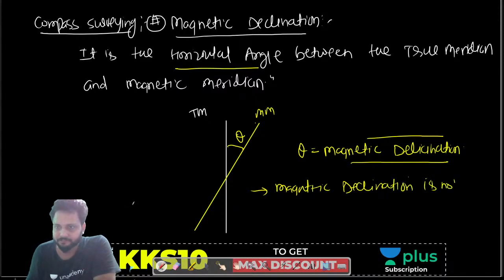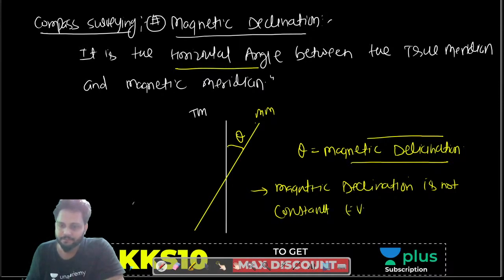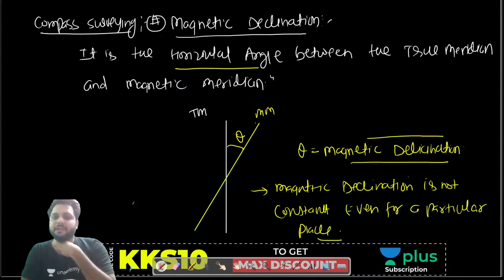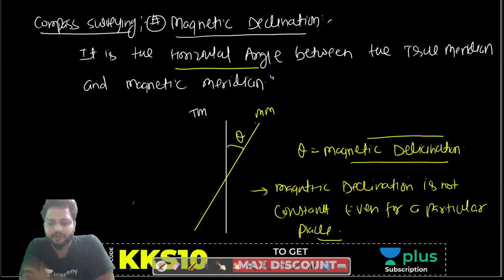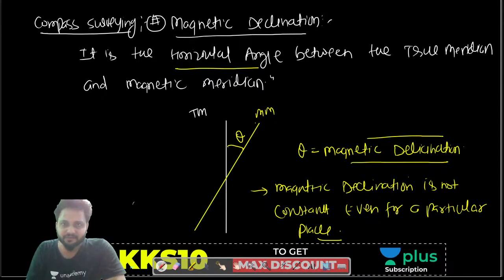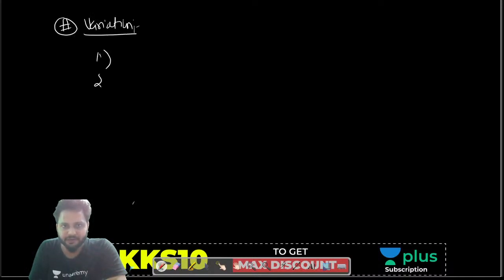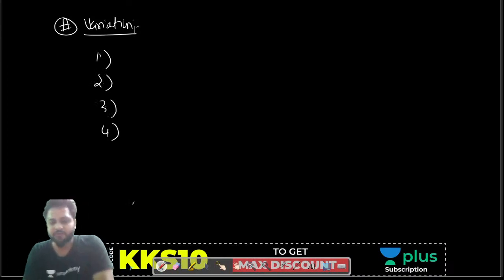An important point: magnetic declination is not constant, even for a particular place. The change is called variation. There are four different types of variation in magnetic declination.